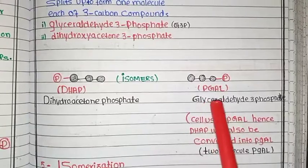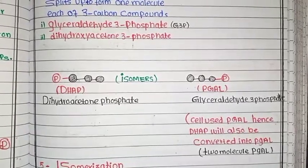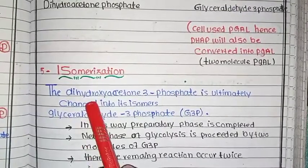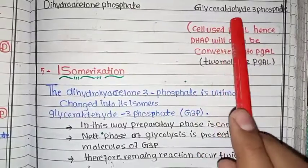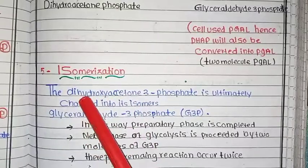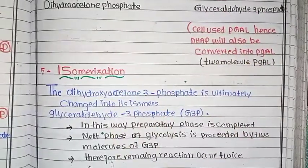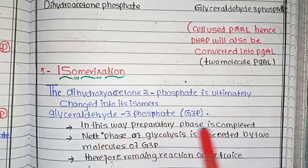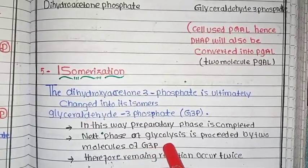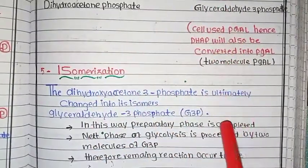So two molecules of glyceraldehyde-3-phosphate are made. With this, the first phase — the preparatory phase — is completed. The next phase of glycolysis proceeds with these two molecules of G3P. Since both molecules are identical, we will show the reactions once, but remember all remaining reactions occur twice.